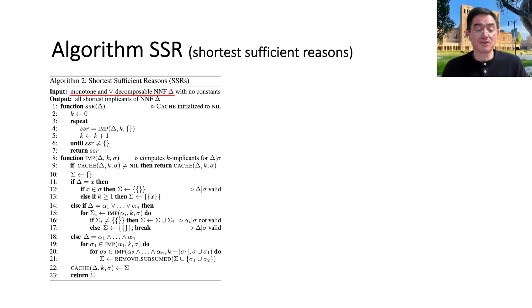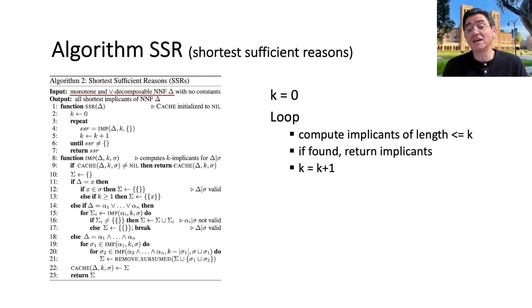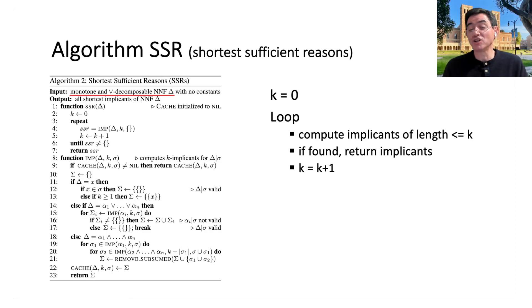The algorithm for shortest sufficient reasons is a bit more involved. It's a best-effort algorithm because finding the shortest sufficient reasons is provably hard. The key insight is: I don't know the length of the shortest sufficient reasons, so I set K to zero and search for implicants of the circuit of that length. If found, done; if not, increase K by one and repeat. When I reach K=5 searching for implicants of length five, I already know there are none of length zero through four, so I can apply significant pruning under those conditions. This enables sophisticated pruning techniques that turn out to be quite effective in practice.